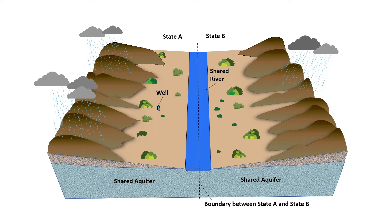This diagram shows a hypothetical transboundary aquifer connected to a gaining river. Both the aquifer and the river are shared by both states A and B. This video will illustrate how groundwater flow changes when state A pumps from a well near the boundary.